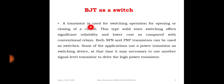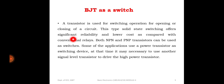Having studied BJT as an amplifier, let us now study the application of BJT as a switch. A transistor is mainly used for two purposes: switching operation and amplifying operation. For switching, it should act as either an open or closed switch. Solid-state switching offers significant reliability and lower cost when compared with the conventional relay switch.